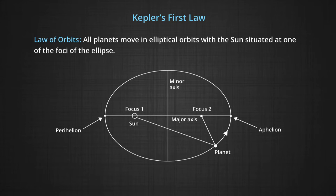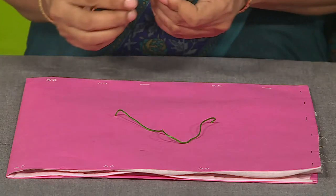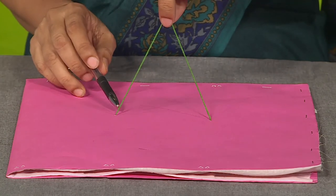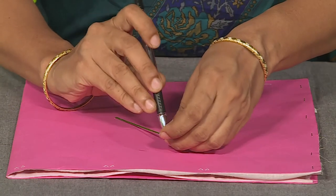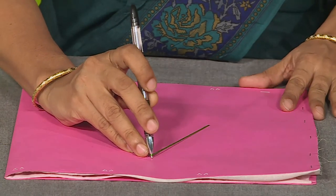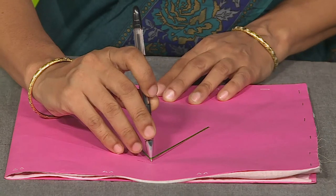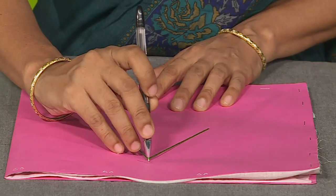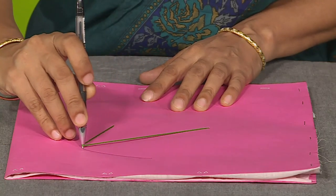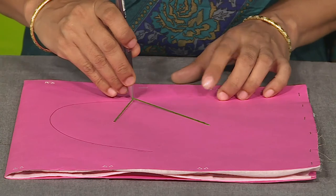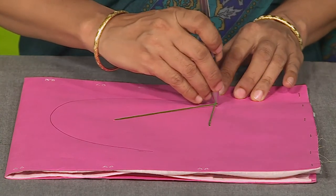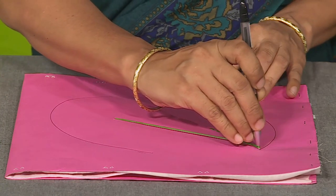To understand the construction of an ellipse, I have here an arrangement in which we will construct an ellipse. I have this pen and a loop of thread which is fixed at two ends on this base. Using this pen, I will keep the loop of thread tight and move the pin. You can see that on the paper a figure is coming up which will help you understand about the ellipse.